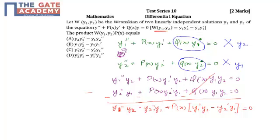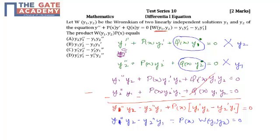We can rewrite this as: y1''·y2 - y2''·y1, minus p(x)·W(y1, y2) = 0. Taking the Wronskian term to the other side, we get p(x)·W(y1, y2) = y1''·y2 - y2''·y1. That is nothing but our option A. Thank you.